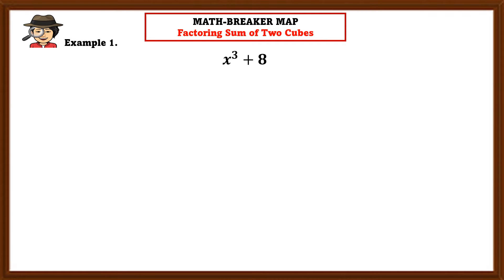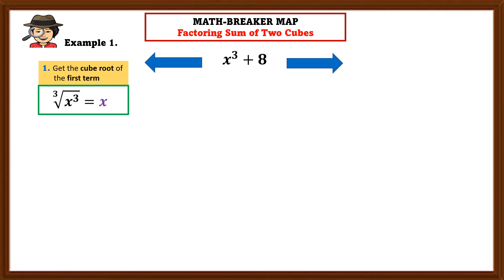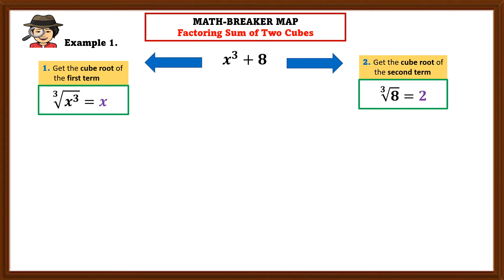For the first example, we have x³ + 8. When we say sum of two cubes, the first and second terms are both perfect cubes. Step 1 is to get the cube root of the first term: the cube root of x³ equals x. Step 2 is to get the cube root of the second term, which is 8: the cube root of 8 equals 2.